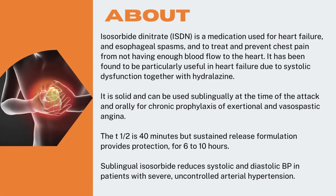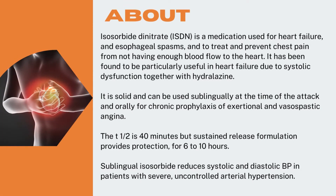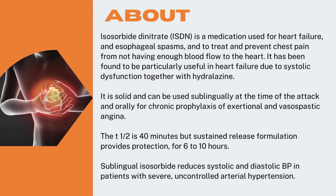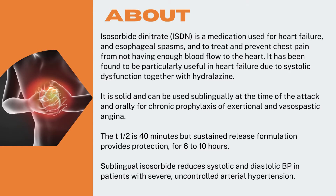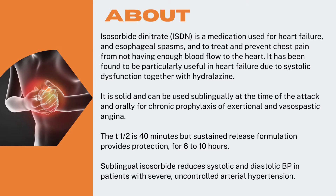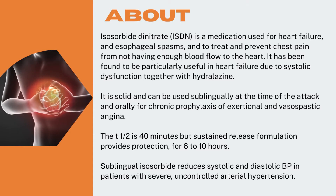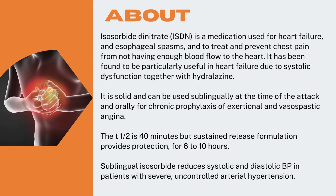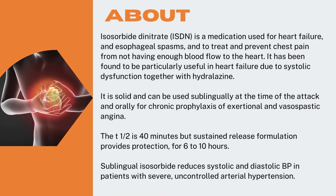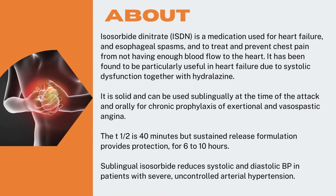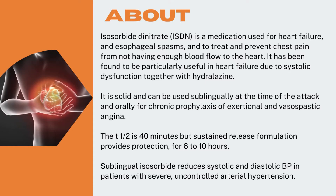About Isosorbide Dinitrate (ISDN): it is a medication used for heart failure and esophageal spasms, and to treat and prevent chest pain from not having enough blood flow to the heart. It has been found to be particularly useful in heart failure due to systolic dysfunction together with hydralazine. It can be used sublingually at the time of the attack and orally for chronic prophylaxis of exertional and vasospastic angina.